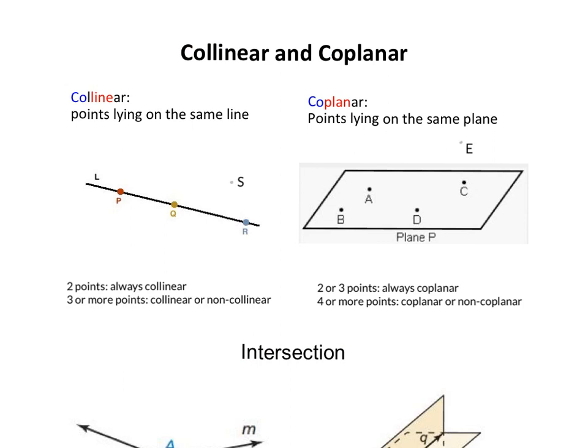When we have multiple points, regarding their relative positions, there are two special cases. One special case is all the points lying on the same line. Point P, Q, R here, they all lie on one line. We say point P, Q, R are collinear points. Co is the prefix meaning together. They are together on one line.